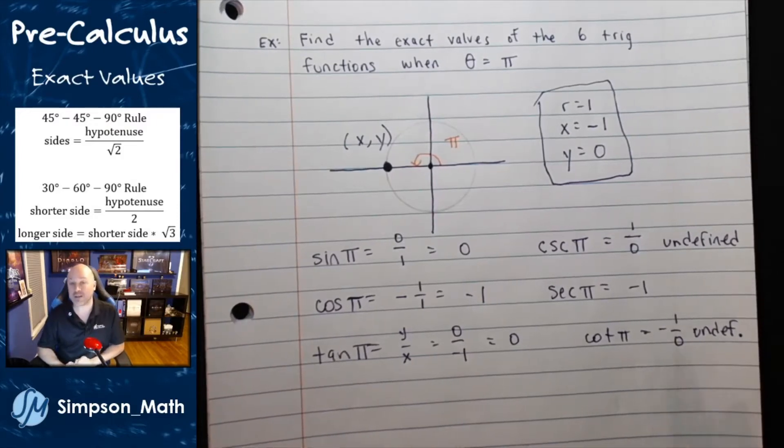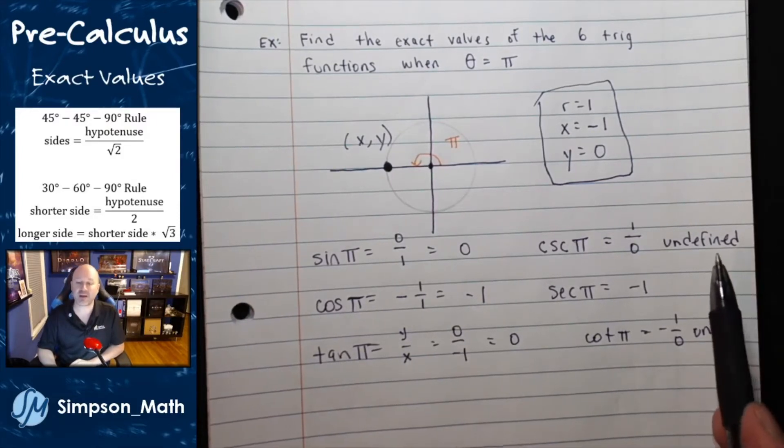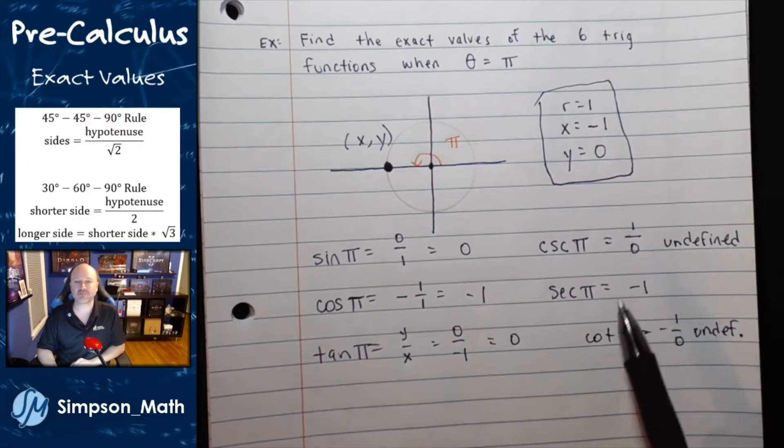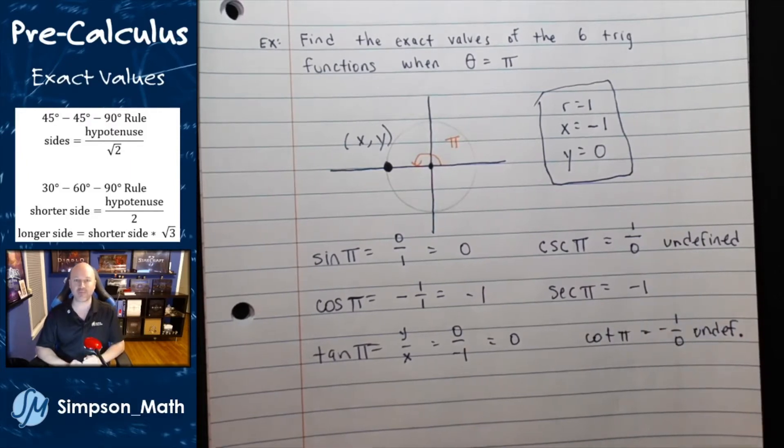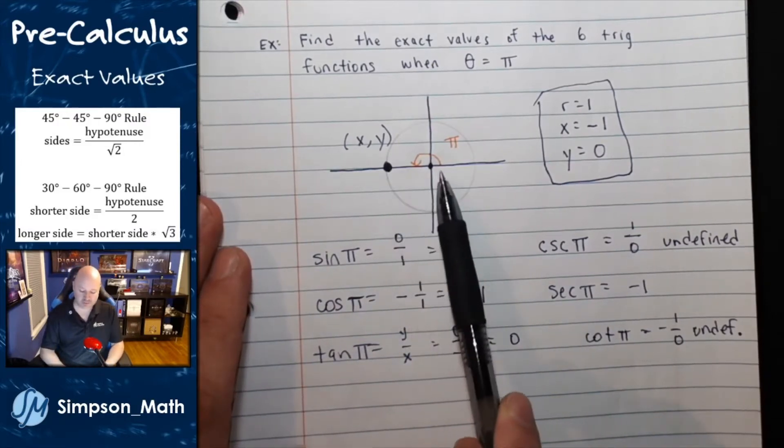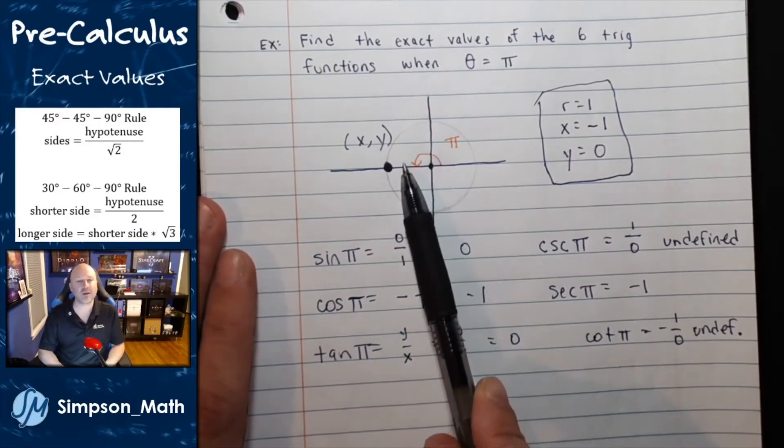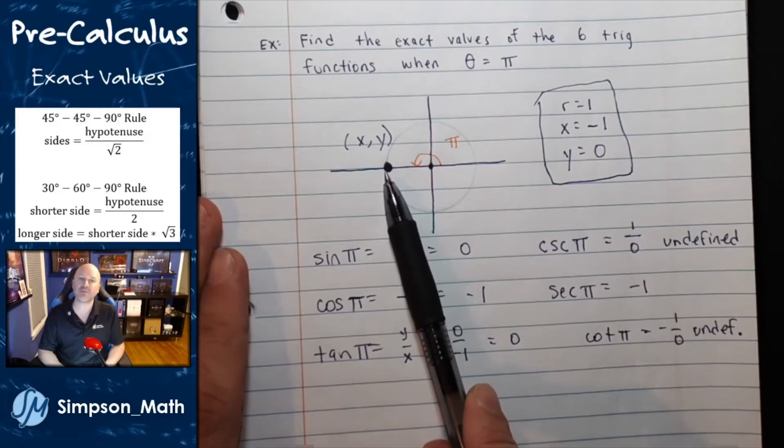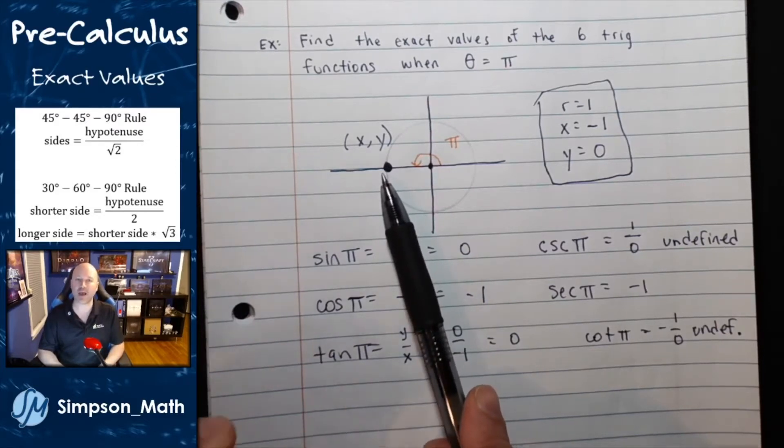So these quadrantal angles, you may have some undefined results when you're trying to divide by 0. So just be aware of that. But that's how I would handle the quadrantal angles. You just draw the angle like normal. You can't draw a right triangle, but you can start to label your x, your y, and if you let that radius be 1.